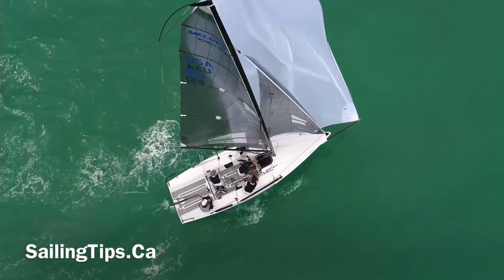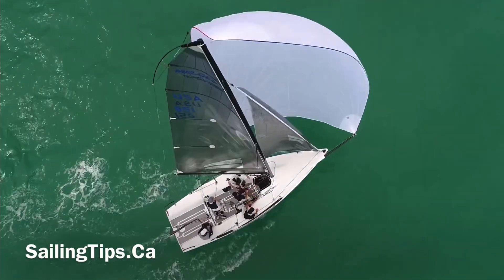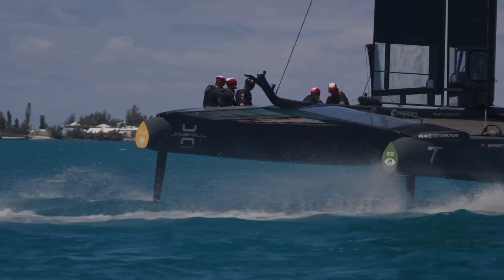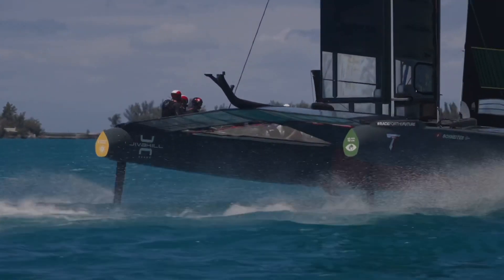For most boats, launching a spinnaker and bearing away is the fastest way to get downwind, but the foiling boats they use in the America's Cup and SailGP don't use spinnakers, and we're going to explain why.